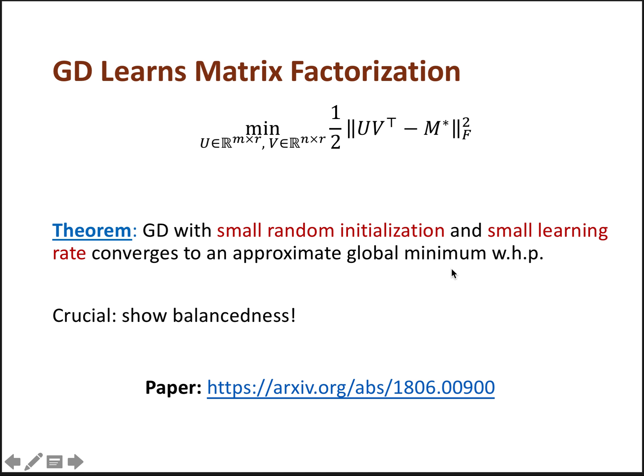And as a concrete application, we can now solve the matrix factorization problem using gradient descent. Our theorem here says that gradient descent with small random initialization and small learning rate can converge to an approximate global minimum with high probability. And the crucial step in the proof is to show balancedness.